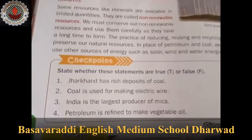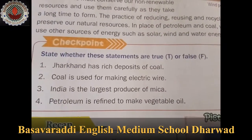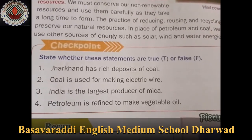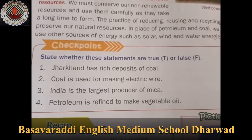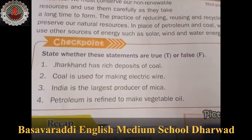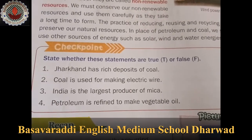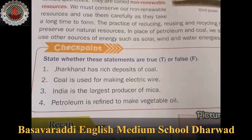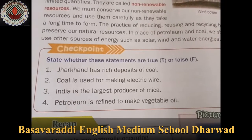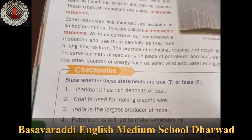Second question: Coal is used for making electric wire. That is false. Third question: India is the largest producer of mica. That is true.